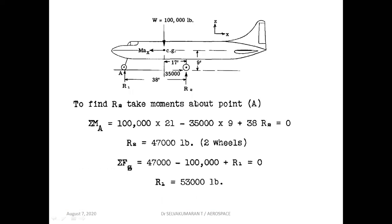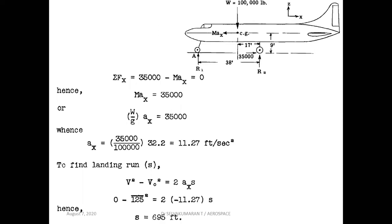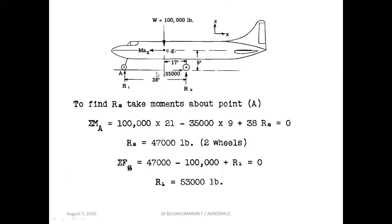To find reaction R2, take the moment about A (sigma MA = 0): 100,000 into 21 (that is 38 minus 17) is clockwise, positive. 35,000 (the MA_x inertia force) into 9 is anticlockwise, negative. R2 into 38 is anticlockwise, negative. From this R2 is found. Then resolving vertically: R1 plus R2 equals the weight of 100,000. So R1 can be found from that expression.